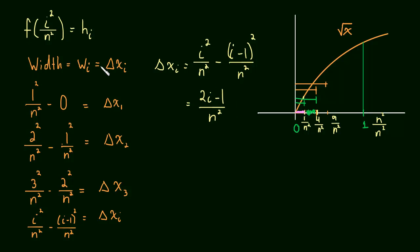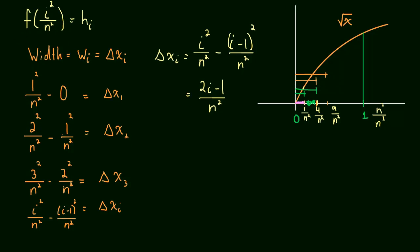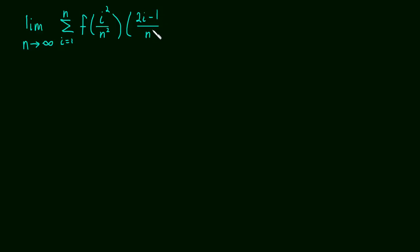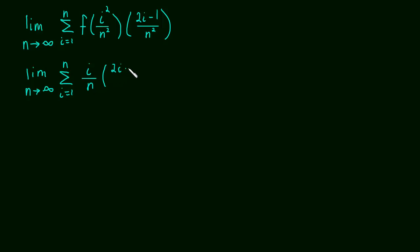So we have a formula for the widths and we know what the heights are. Now we can just take our sum. The limit as n approaches infinity of the sum as i goes from 1 to n of f of i squared over n squared times the width, which was 2i minus 1 over n squared. Plugging i squared over n squared into the square root gives us just i over n. So the expression becomes i over n times 2i minus 1 over n squared.